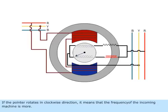If the pointer rotates in clockwise direction, it means that the frequency of the incoming machine is more.